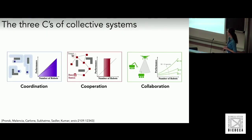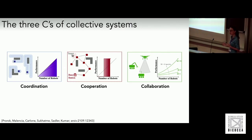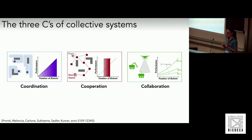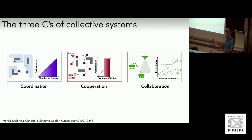Let me talk about the difference between coordination, cooperation, and collaboration — many people use these words interchangeably, but within our community there is a distinction. Coordination is when we get different agents to work together with at most a linear gain in performance. For example, if you distribute robots into space for coverage, the more robots you add, the faster you cover — but it's no more than a linear gain.